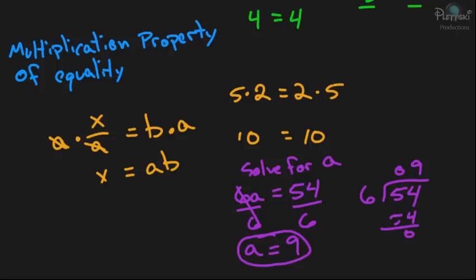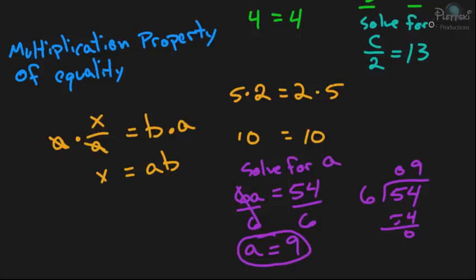Now let's see one using the multiplication property of equality. If you have c over 2 equals 13 and we want to solve for c, we can multiply both sides of the equation by 2. c over 2 multiplied by 2 — the 2s cancel out — and you're left with c equals 13 times 2, which is 26.